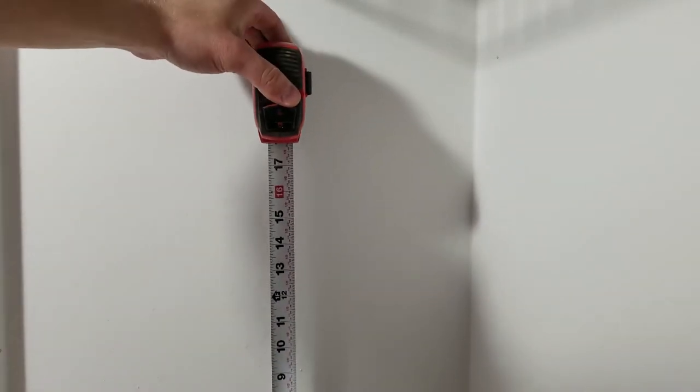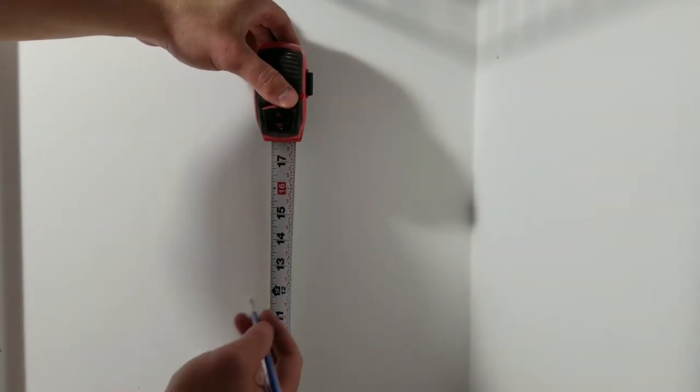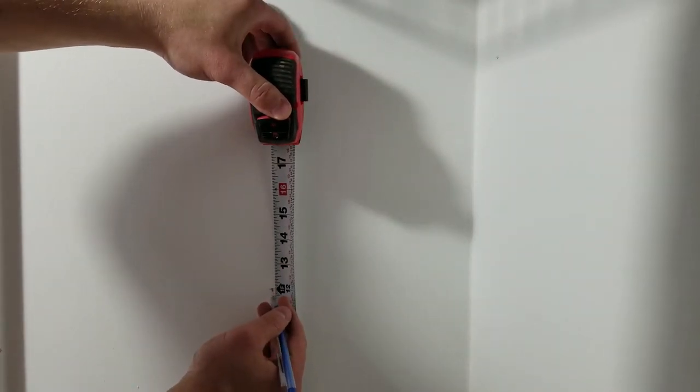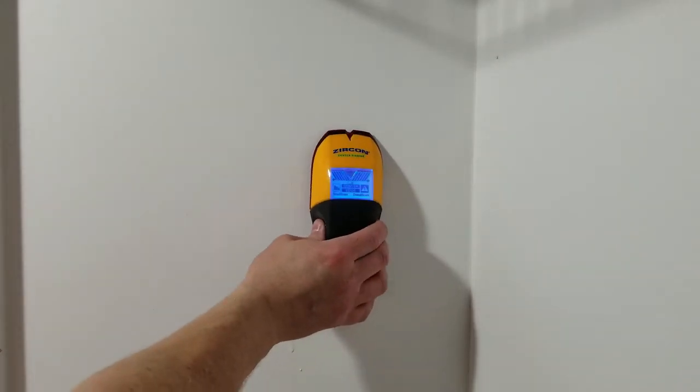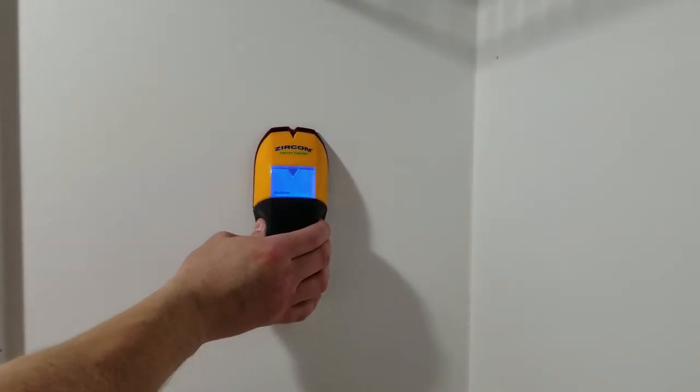Here I'm measuring the height of my outlet box. Typically the bottom of the outlet box will be about 12 inches above the finished floor. I'm going to locate my stud again so I know exactly where to cut the hole for my new outlet box.